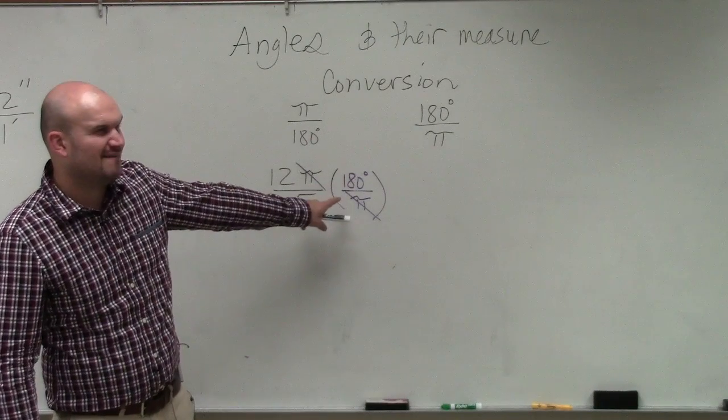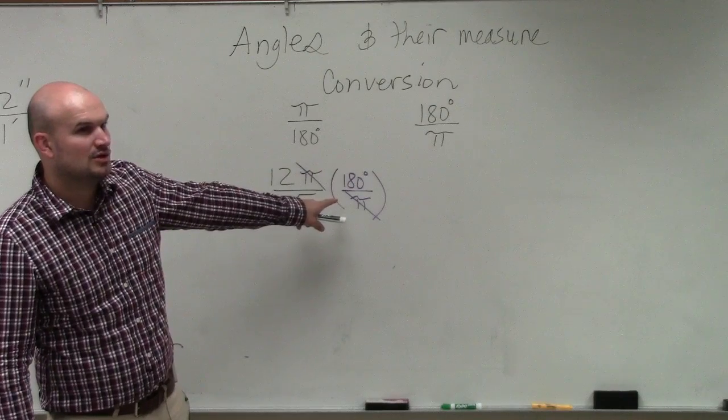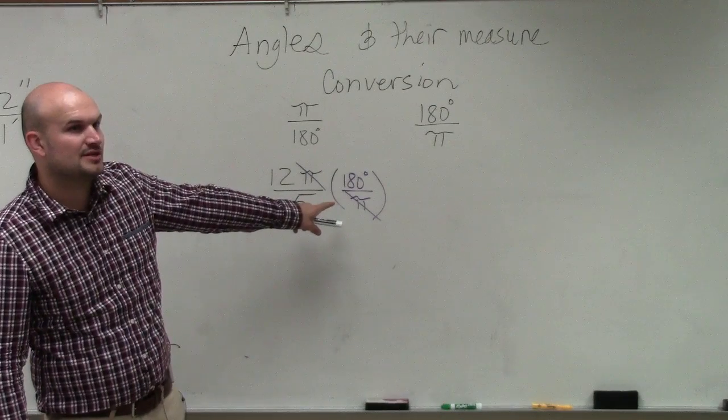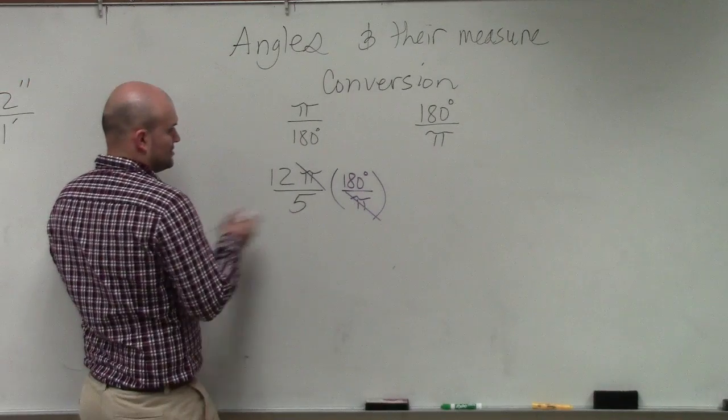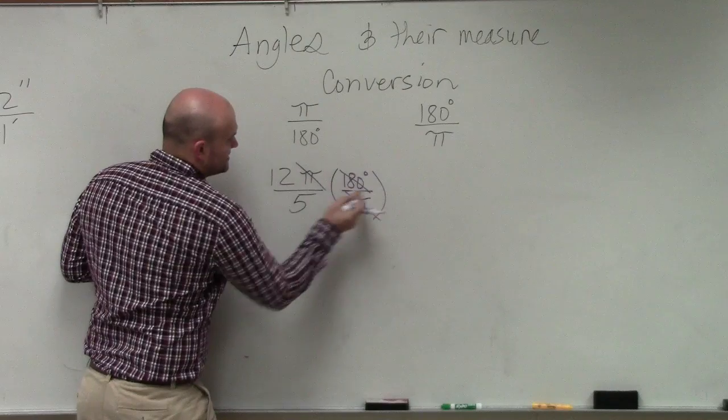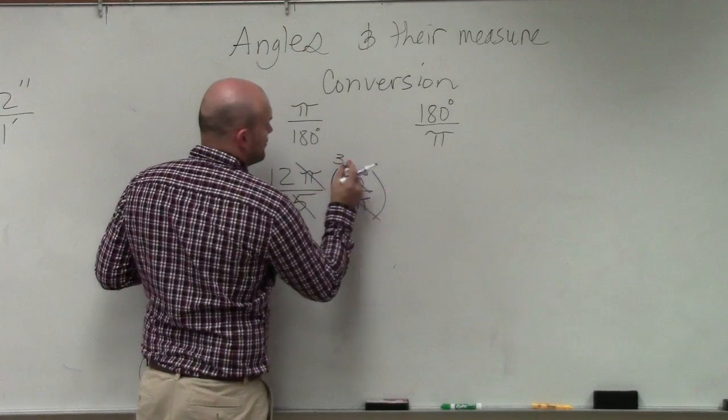So 5 goes into 180. Well, it goes into 80 16 times. It goes into 20, so it'd be 36 times. So therefore, 180 divided by 5 is 36.